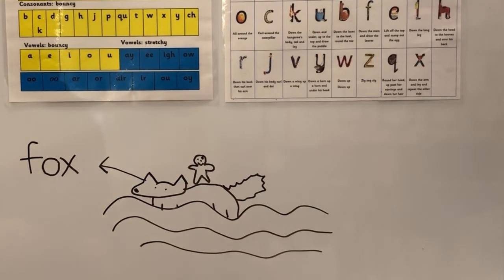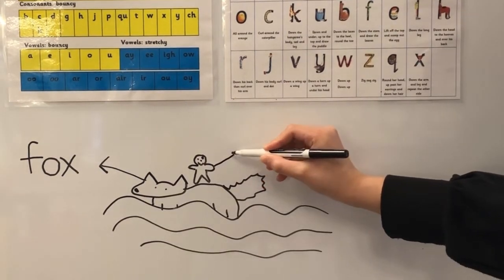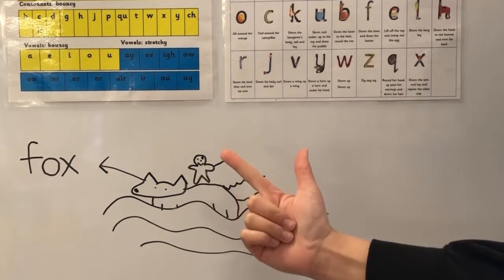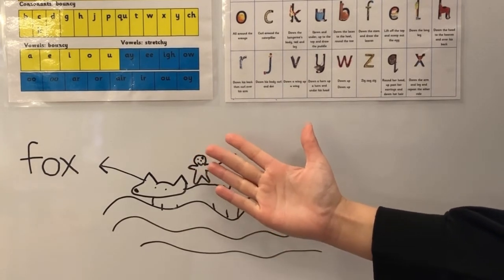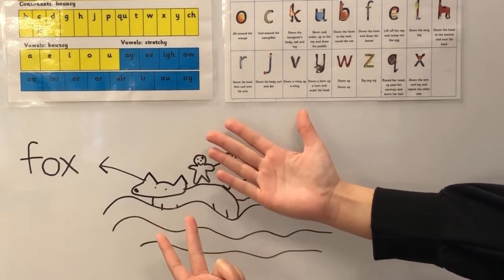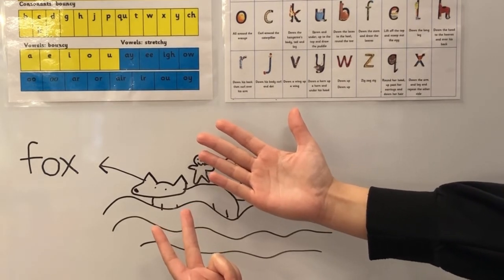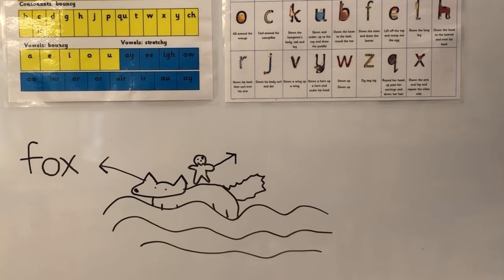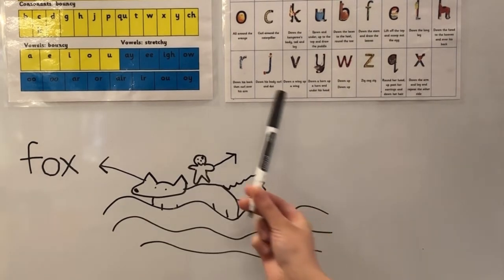We are now going to label our gingerbread man. I'm going to draw an arrow coming out of my gingerbread man. Now I'm going to sound out his name - first we're going to sound out the word 'gingerbread' and then we're going to sound out 'man'. Are you ready? J, I, N, J, R, B, R, E, D. How many sounds are there? Fantastic - if you said there are eight sounds! Our first sound is J - let's look around that sound chart.